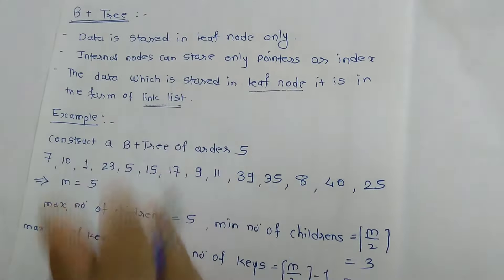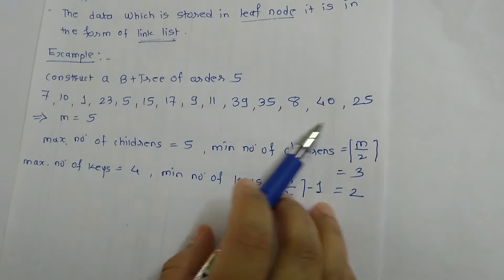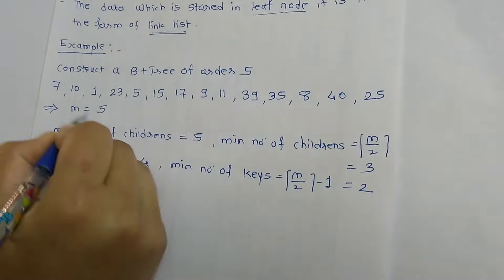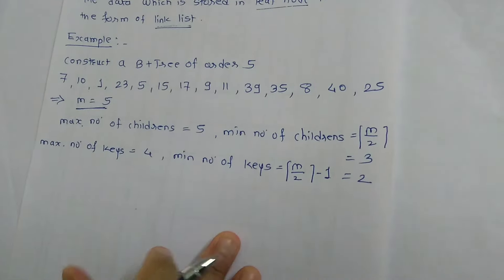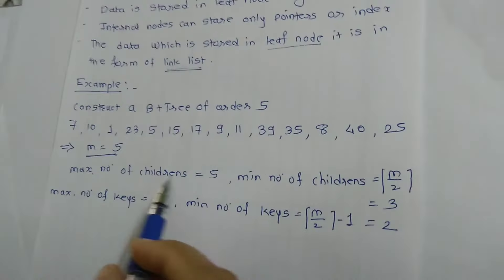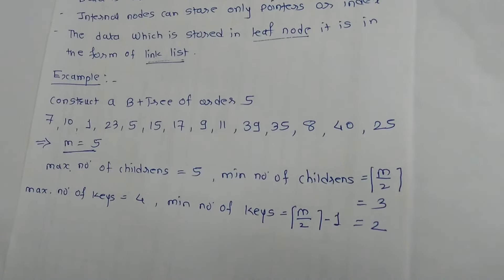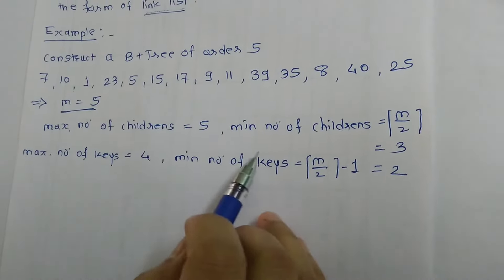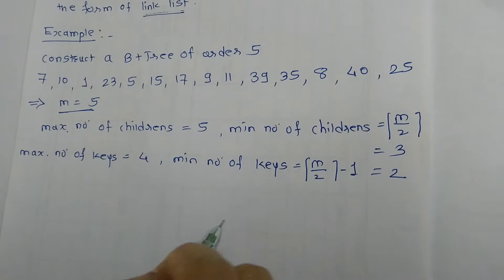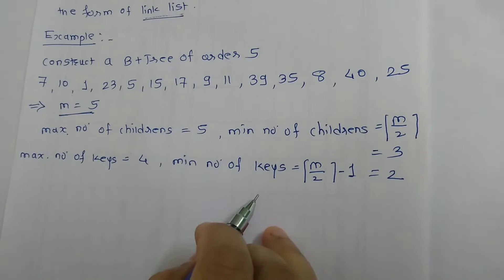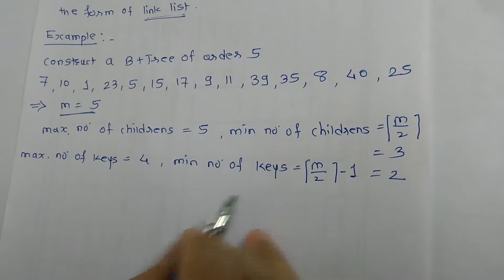We will discuss B plus tree with one example. Create a B plus tree of order 5, so M equals 5. There are properties for calculating the maximum number of children, minimum number of children, number of keys, and minimum number of keys. For the calculation of these properties I have already explained in the B tree video, and the link for that video is provided in the description box. Let's start calculating the B plus tree.